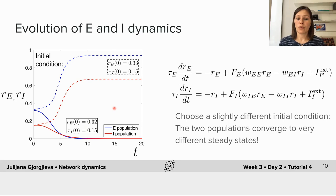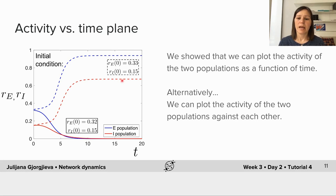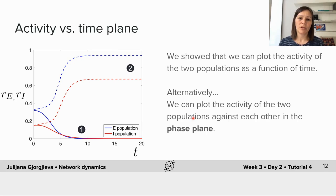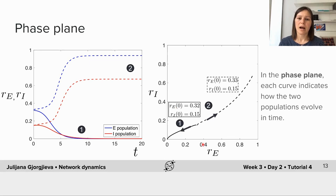So what goes on? To really understand why these two different initial conditions end up converging to different steady states, it helps to visualize the activity not in the activity versus time plane, but in the phase plane where we can plot the two populations against each other. Rather than plotting activity versus time, we plot the change in activity as a function of both populations simultaneously. We will visualize how the two activities change in time by looking at the plane where the x-axis shows the excitatory activity and the y-axis shows the inhibitory activity.